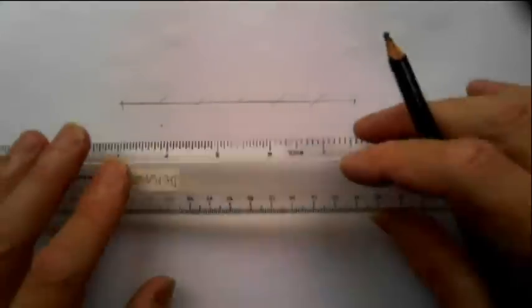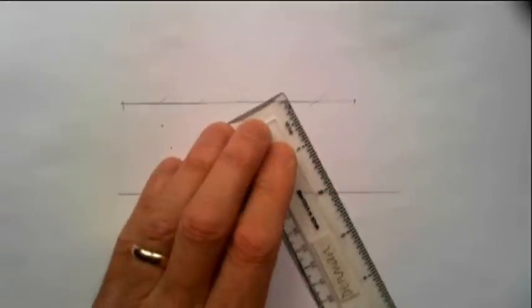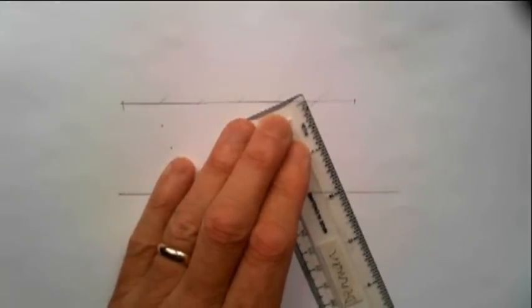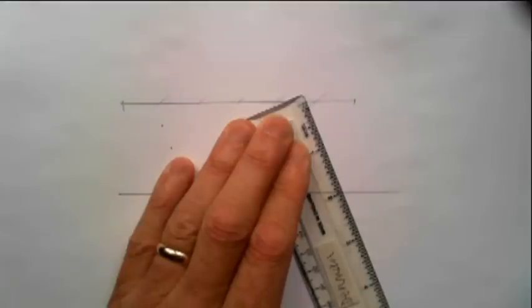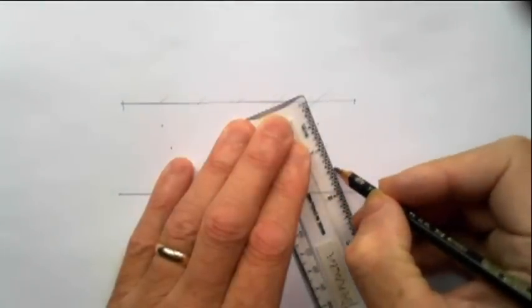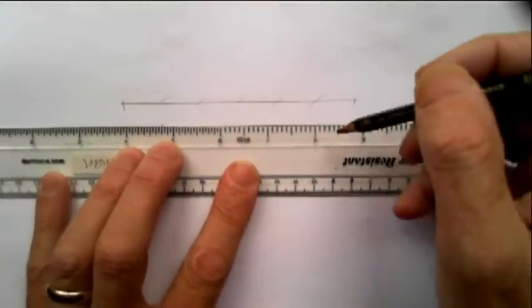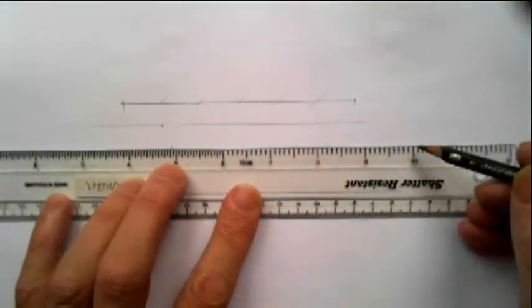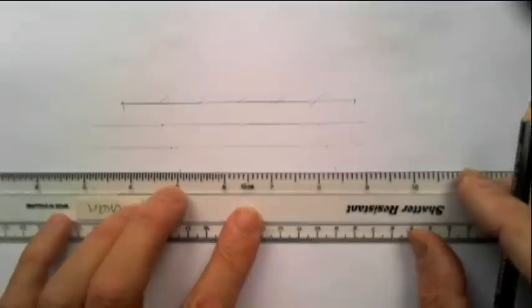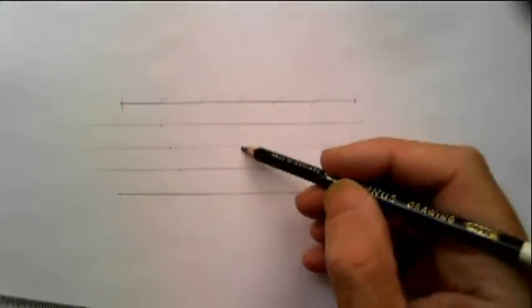And if you've got a set square, you can simply rule, not a set square, a T square. You can simply rule across. If you haven't got a T square, then you simply do it on the other side and then rule across. So, one, two, three. So there you are. That's accurately divided into four.